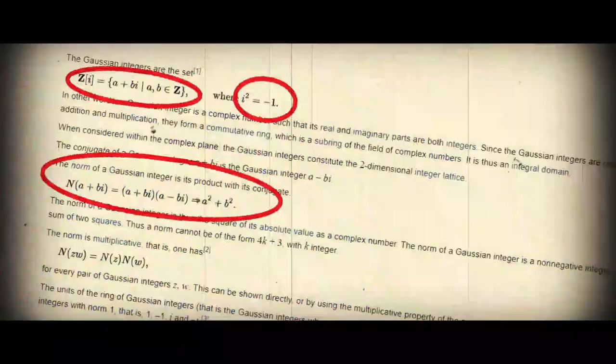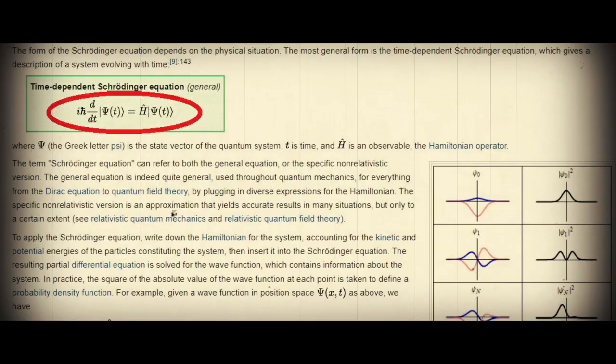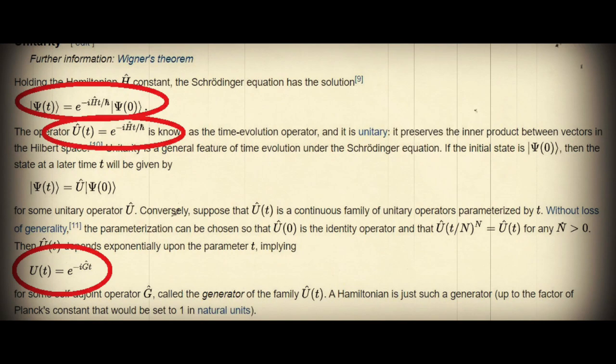It's really surprising to see that the fundamental equation of quantum mechanics starts with a complex number. Schrödinger's famous equation also has this quantity i, which is square root of minus 1. And in the real world, there is no such thing called a square root of minus 1. It is because of a mistake in one of the rules of multiplication.